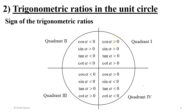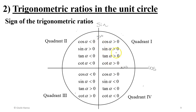Regarding signs: the x-axis is the axis of cosine and the y-axis is the axis of sine. In quadrant 1, both x and y are positive, so cosine is positive and sine is positive. Since tan and cotan are ratios of sine and cosine, they are also positive in quadrant 1.